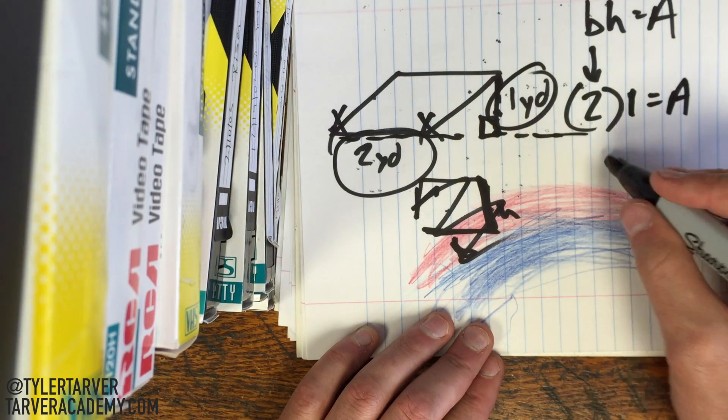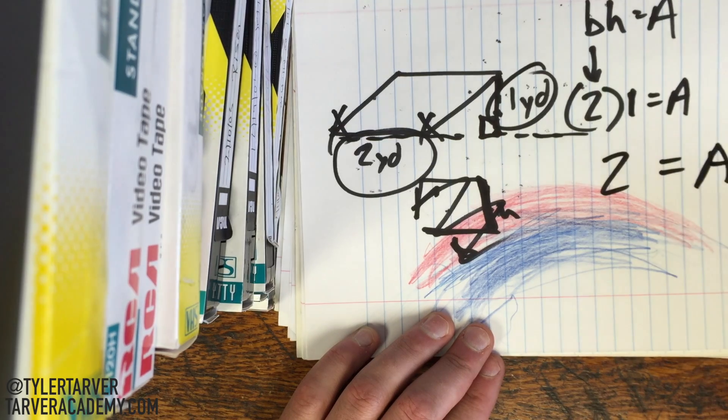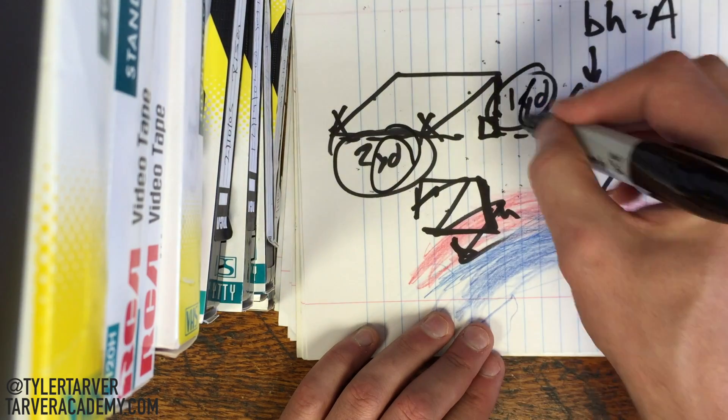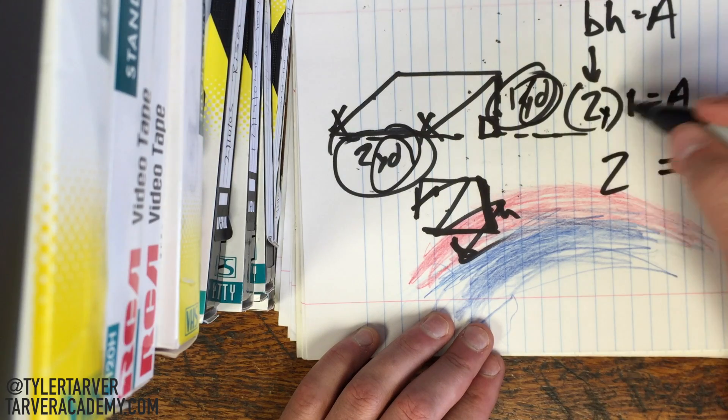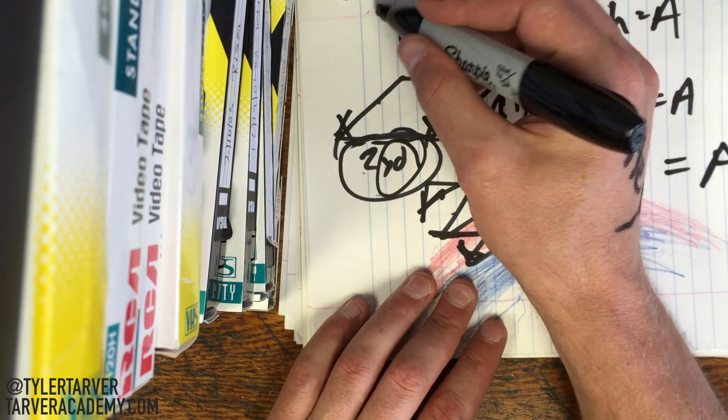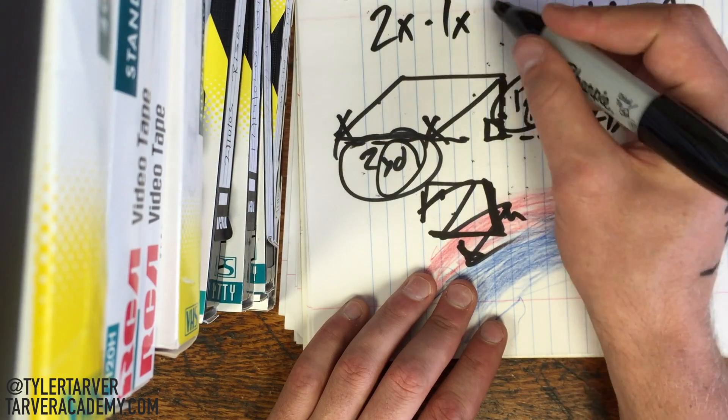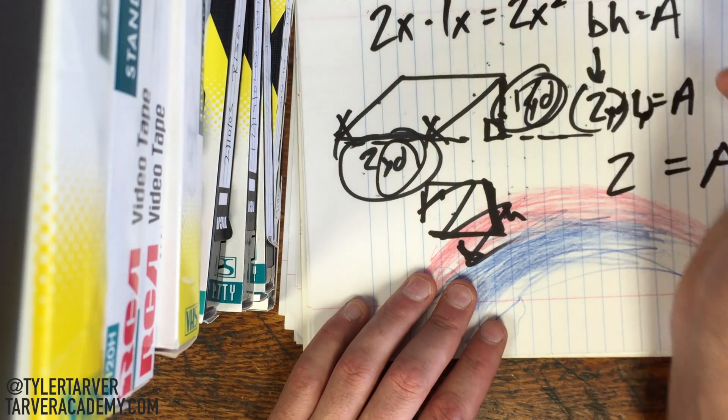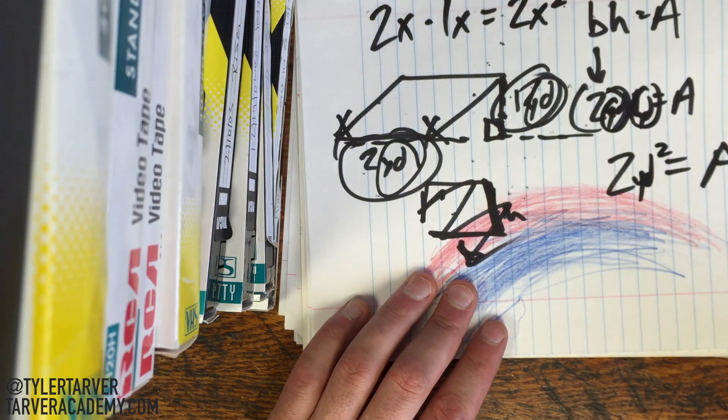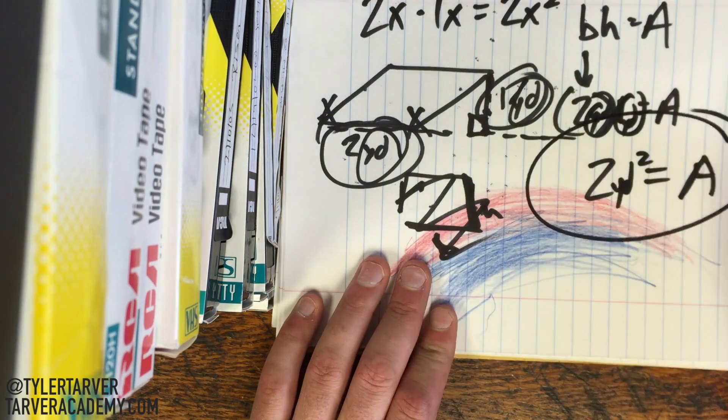All right, so we got two times one is two. Now, the thing we're gonna do now is make sure we get our unit of measure correct, so we use yards. Well, whenever we multiply that, that's gonna be two yards times one yard, which a yard times yard, just like if you did, you know, 2x times 1x, that would be 2x squared. Same thing goes for yards, so it's two yards squared equals our area, and you've got your answer.